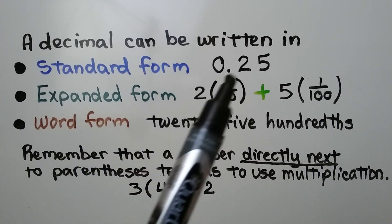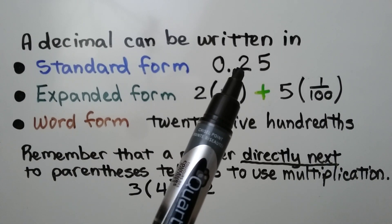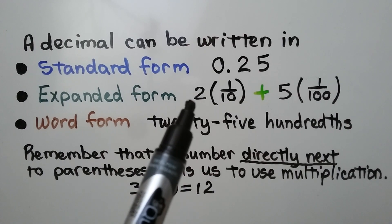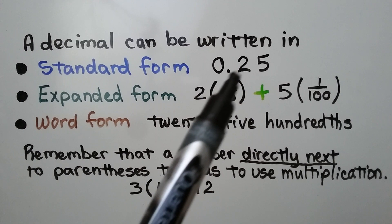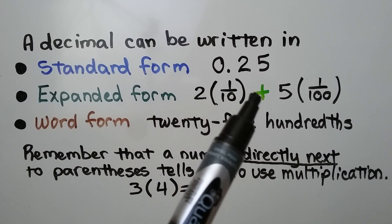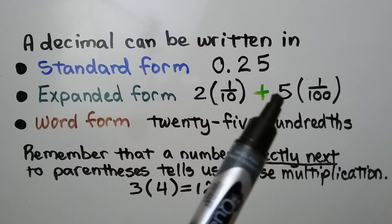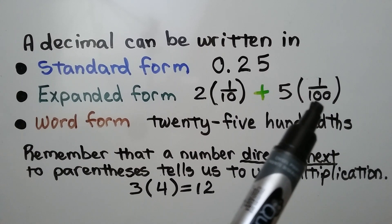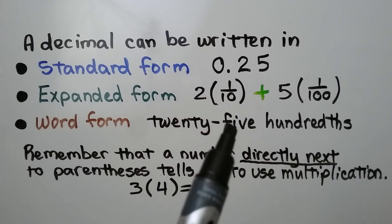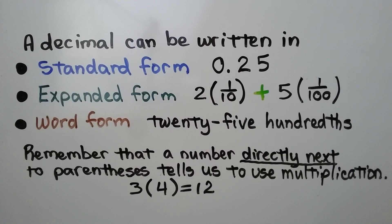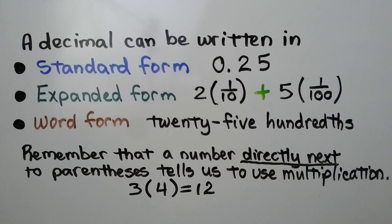Here we have twenty-five hundredths written in standard form. In expanded form, we would multiply two times one-tenth, because it's in the tenths place, and add it to five times one-hundredth, because the five is in the hundredths place. In word form, we would write twenty-five hundredths. Remember that a number directly next to parentheses tells us to use multiplication.